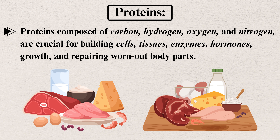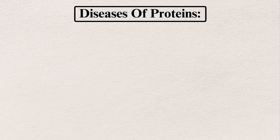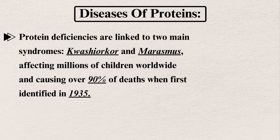Protein is composed of carbon, hydrogen, oxygen, and nitrogen, and is crucial for building cells, tissues, enzymes, and hormones, as well as for growth and repairing worn-out body parts. We can get proteins from meat, milk, cheese, and eggs. These are very important for our body.